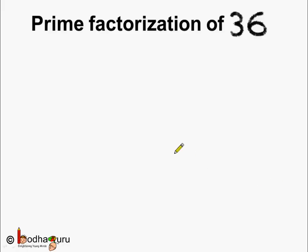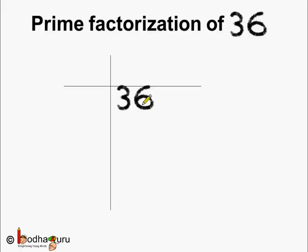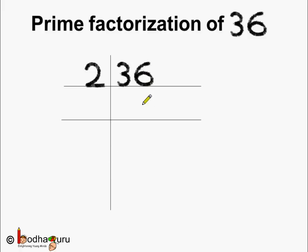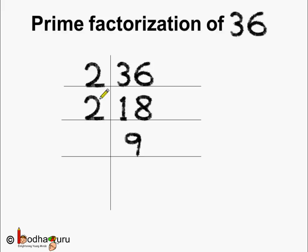Now let us do the prime factorization of number 36. 36 is also an even number and it can be divided by 2, which is the smallest even number. So let us do it — 36. 2 ones are 2 and 2 eighteens are 36, so we get here 18. Again 18 is an even number and we can divide it by 2. So 2 nines are 18. We get 9 here. 9 is an odd number.